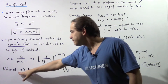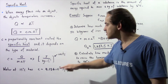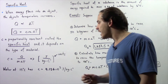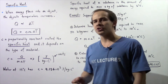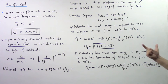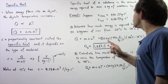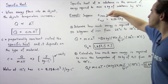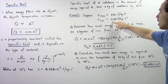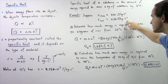For water at 15 degrees Celsius, it requires 4,186 joules of energy to raise 1 kilogram of water by 1 degree Celsius. Now let's look at the following example in which we're going to apply this equation. The specific heat of water is 4,186 joules per kilogram times degrees Celsius.